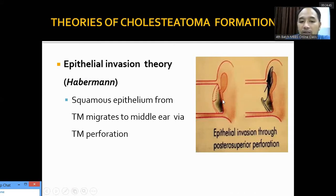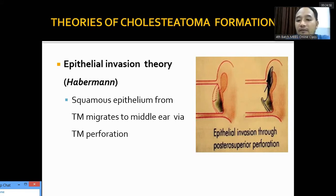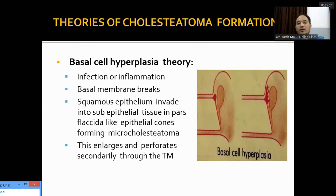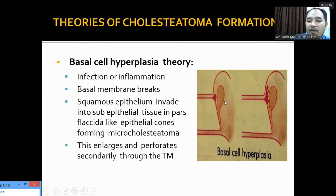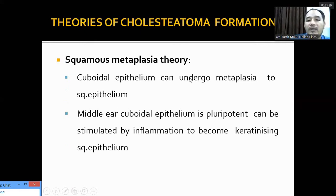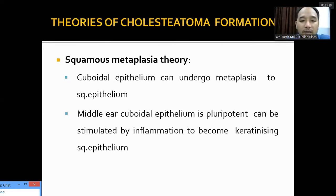Third, the epithelial invasion theory: the squamous epithelium of the outer layer of the tympanic membrane migrates into the middle ear cavity through the tympanic membrane perforation. Fourth, the basal cell hyperplasia theory: due to inflammation or infection, the germinal layer of the outer epithelial layer breaks and infiltrates into the subepithelial tissue in pars flaccida, then goes inside the middle ear. Fifth, the squamous metaplasia theory: the cuboidal epithelium in the posterior superior part of the middle ear undergoes metaplastic changes to squamous epithelium, starts shedding epithelial debris, producing matrix, and forming cholesteatoma.